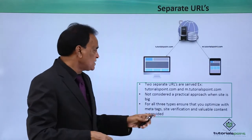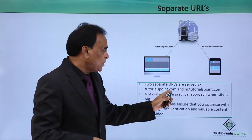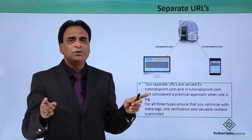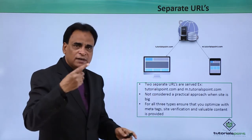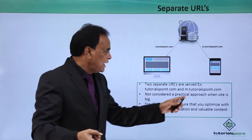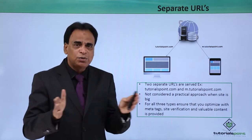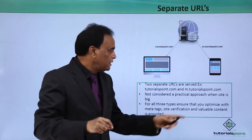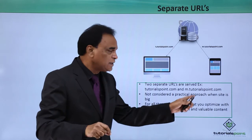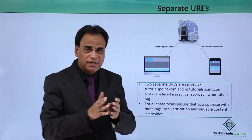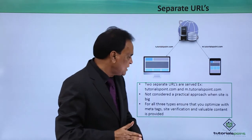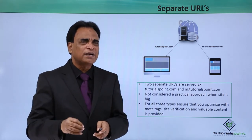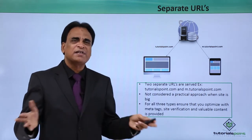In separate URLs, two separate URLs are served — for example, tutorialspoint.com and m.tutorialspoint.com. These are two different URLs: one for desktop and laptop, one for smartphones, though the main domain remains the same. It is configured to ensure the website is available for mobile users. However, this is not considered a good practice when the site is too big, as having two different URLs serving the same pages on a huge site is not recommended.